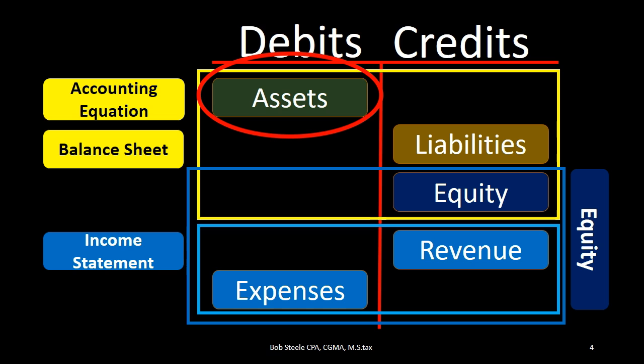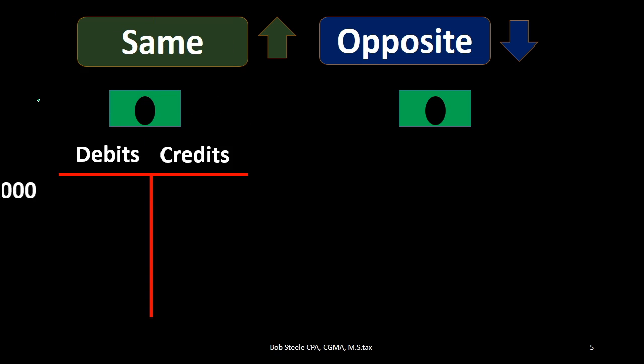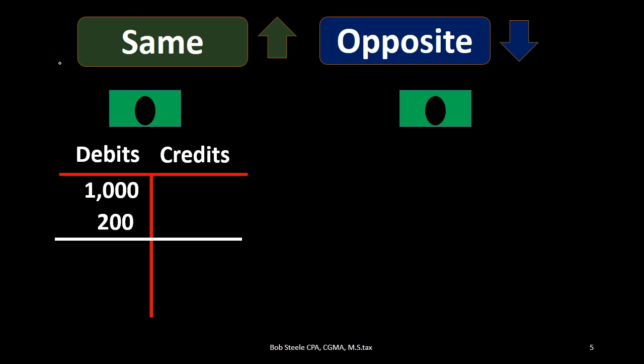All asset accounts have debit balances, so the rule applies the same way to all of them. Let's look at cash first. If cash has a $1,000 beginning balance, that means it has a debit balance of $1,000 because cash is an asset and assets have normal debit balances. If we want cash to go up, we apply the one rule — do the same thing to it as what it is. It's a debit balance account, so we debit it, bringing it up from $1,000 to $1,200.